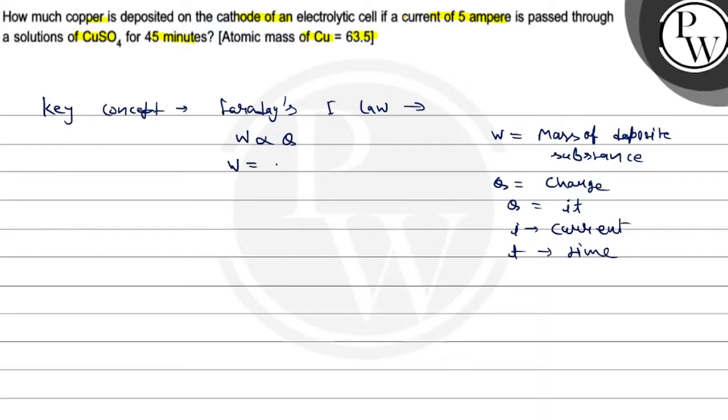So here W is equal to Z into I into T and Z is the electrochemical equivalent.